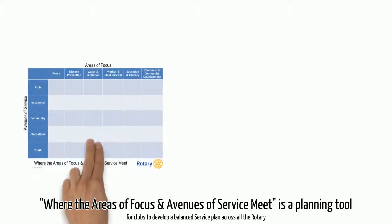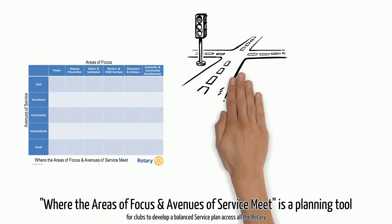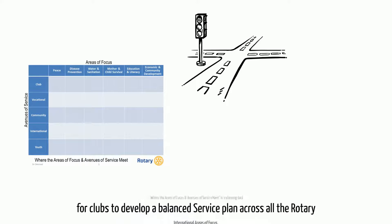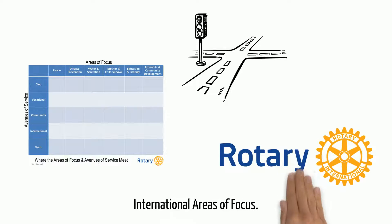Where the Areas of Focus and Avenues of Service Meet is a planning tool for clubs to develop a balanced service plan across all the Rotary International areas of focus.